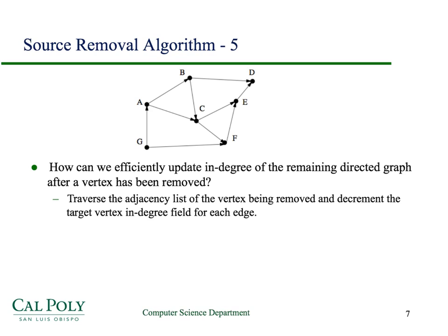How do we update the in-degrees when we remove a vertex and its associated edges? All we have to do is traverse the adjacency list of the vertex being removed and decrement the target vertex's in-degree field for each of those edges. So we traverse the adjacency list of G when we remove it: there's an edge from G to A, so we decrement the in-degree of A by 1, and then the next entry is F, so we decrement the in-degree of F by 1.